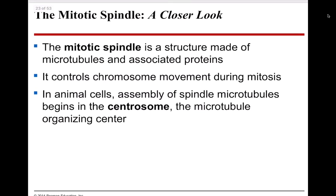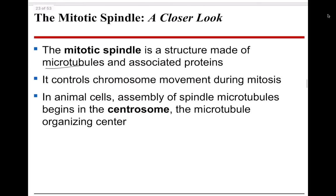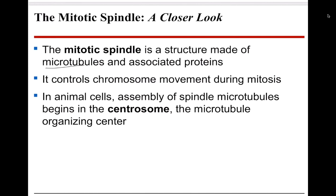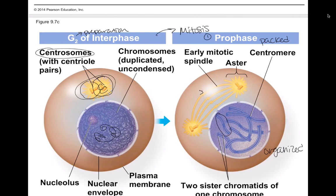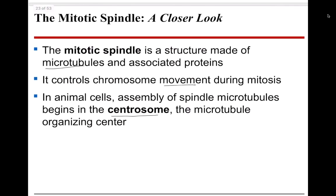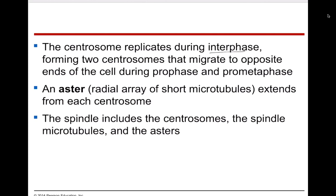The mitotic spindle is the structure made of microtubules that helps move the chromosomes during mitosis. In animal cells, spindle microtubule assembly starts in the centrosome — the microtubule-organizing center. The centrioles are little cylinders inside; the whole structure is called an aster, and the microtubules grow out from there. The centrosome replicates during interphase, forming two different centrosomes that migrate to opposite ends of the cell during prophase and prometaphase.